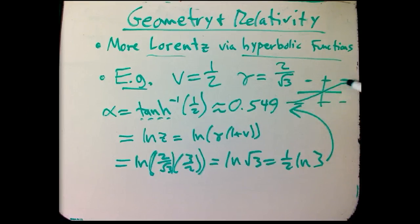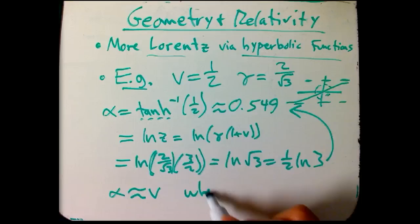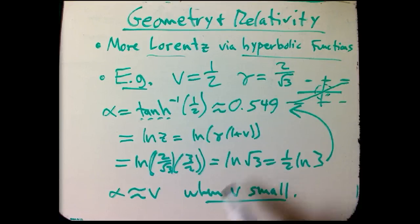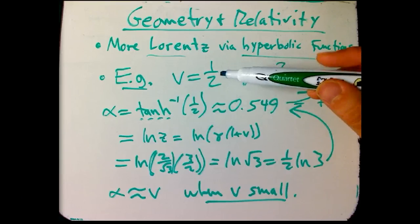V and alpha are almost equal. So alpha is approximately equal to V in the Newtonian approximation when V is small, which is nice, which makes sense. We know that V actually is very close to additive when V is small, and we know alpha is always additive, so it would be annoying if they were different, but they are really close to each other.